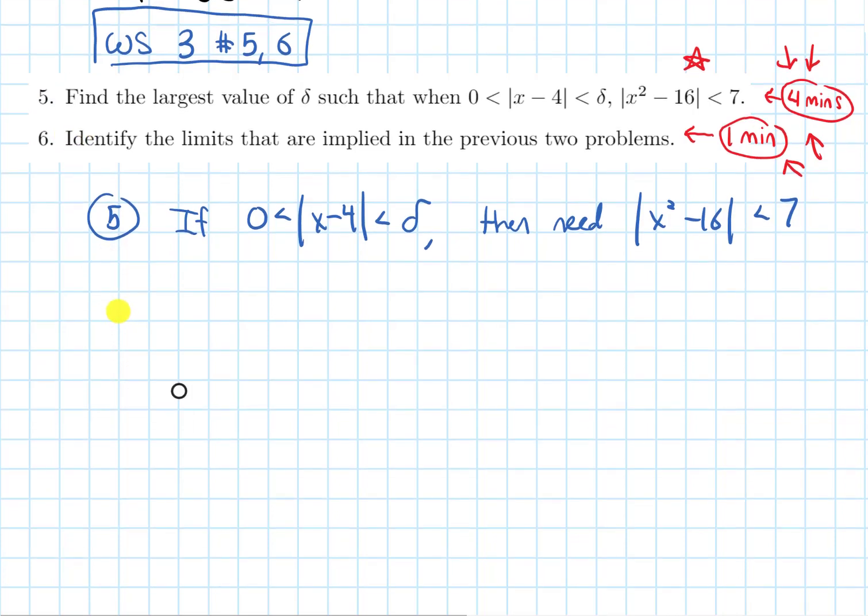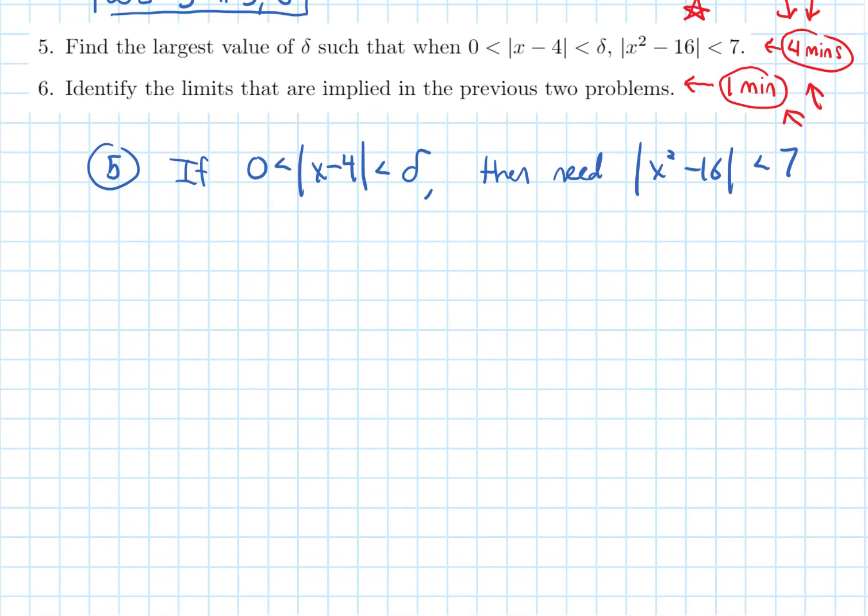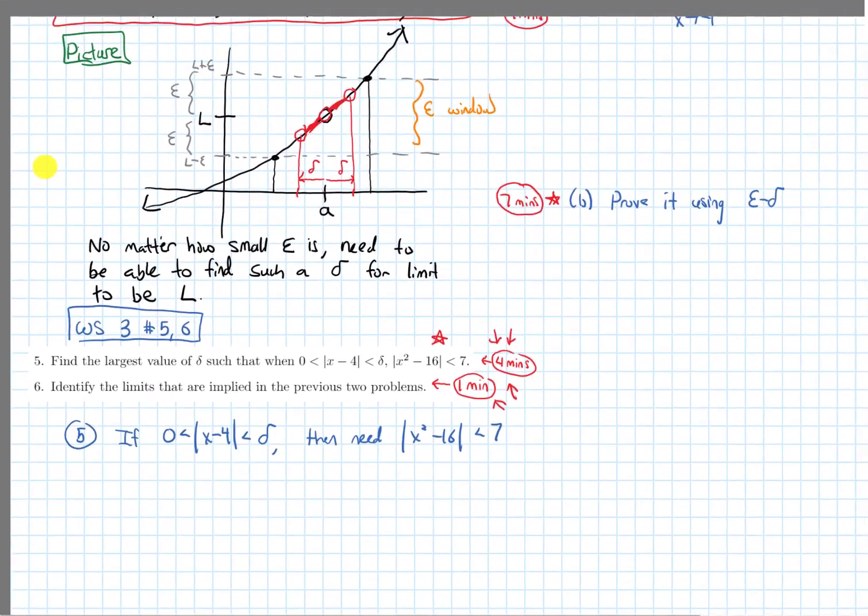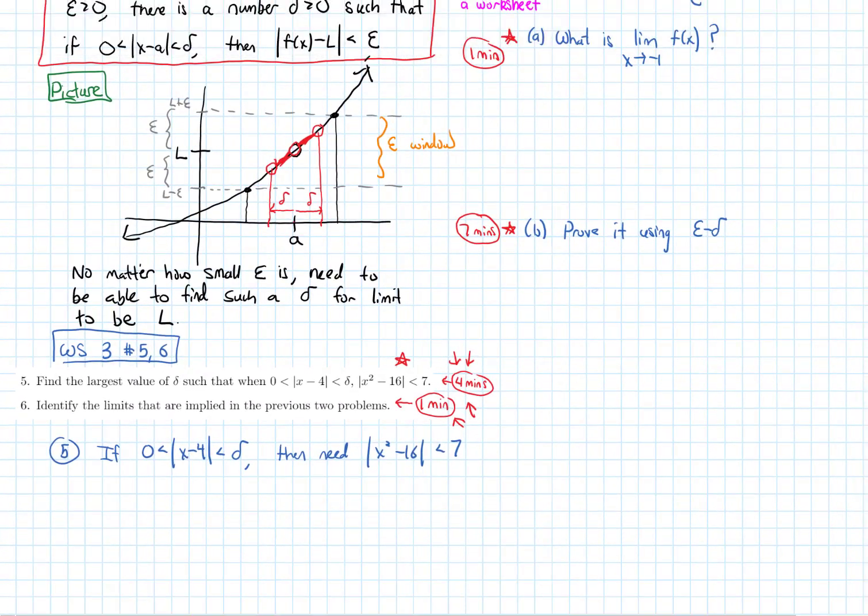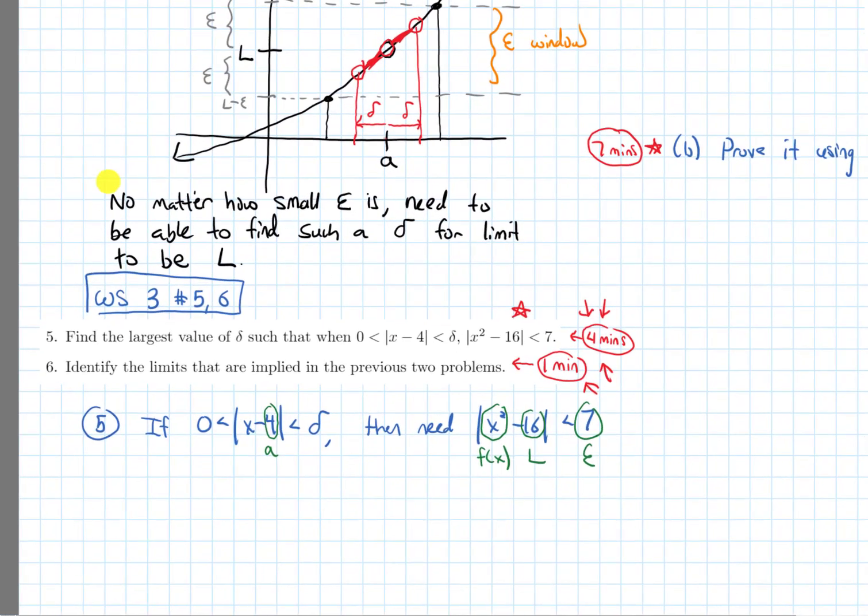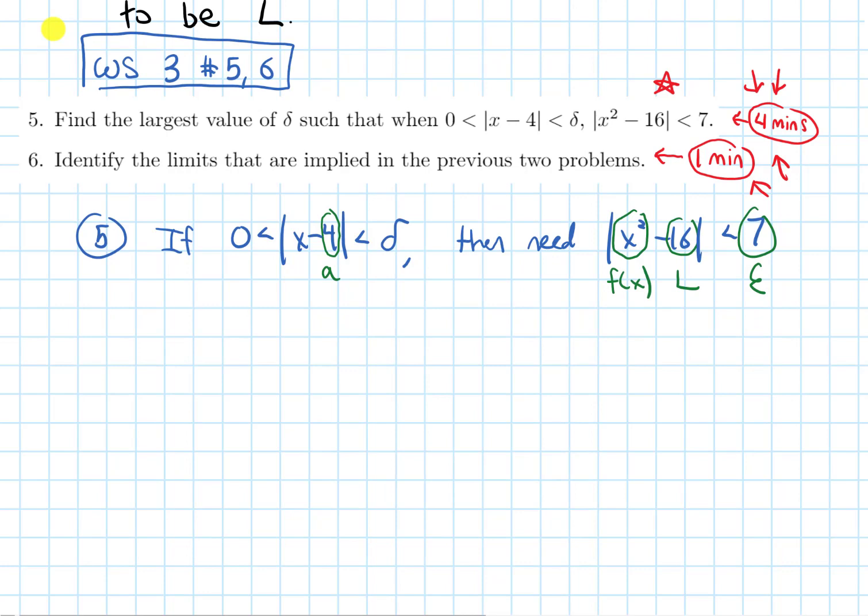All righty, so hopefully you did that. Hopefully you paused it and tried these for a combined five minutes. So the first thing that I want to notice is that a lot of the numbers that show up here, I can match them with the different parts of our epsilon-delta definition. In fact, if I zoom it out a little bit, I notice that the four matches up with a, and the x minus a, that distance in absolute values is less than zero, and delta, and then x squared matches up with my f(x). This 16 matches up with L, and then the seven matches up with epsilon. So that is important, being able to recognize what those numbers represent.